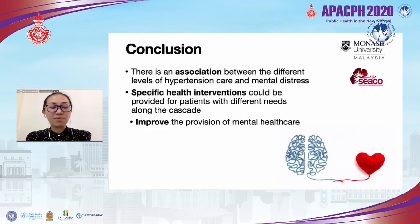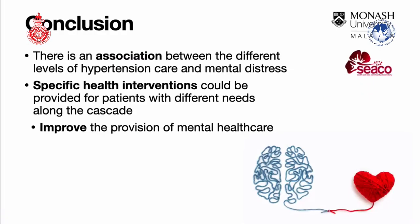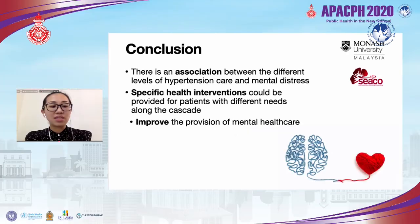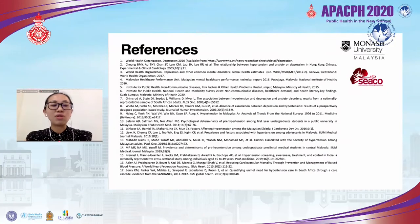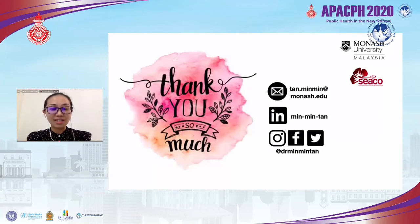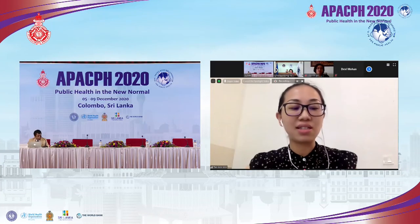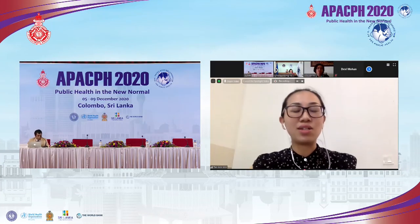In conclusion, our study shows an association between different levels of hypertension care and mental distress. Specific health interventions can be provided for patients with different needs along the cascade, which could improve the provision of mental health care. Thank you — any questions can be raised during the Q&A session.